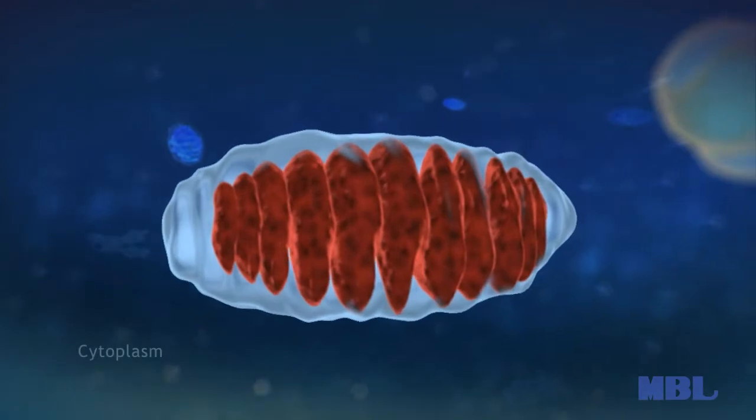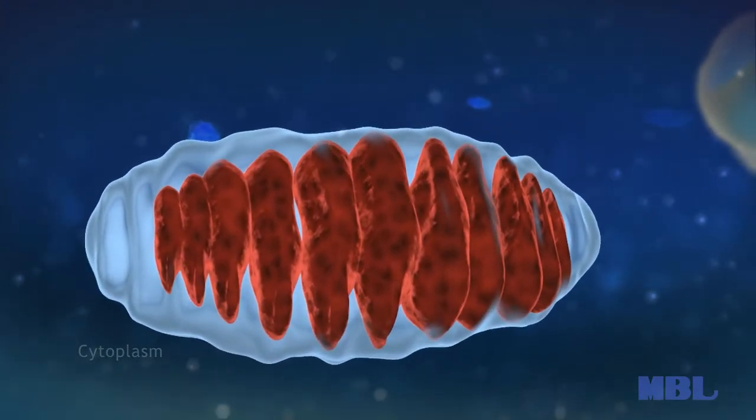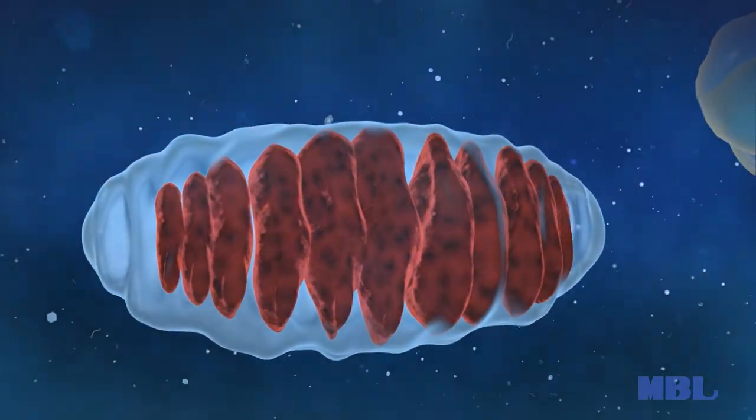Mitochondria are organelles present in the cytoplasm of eukaryotic cells, and their main function is ATP production.